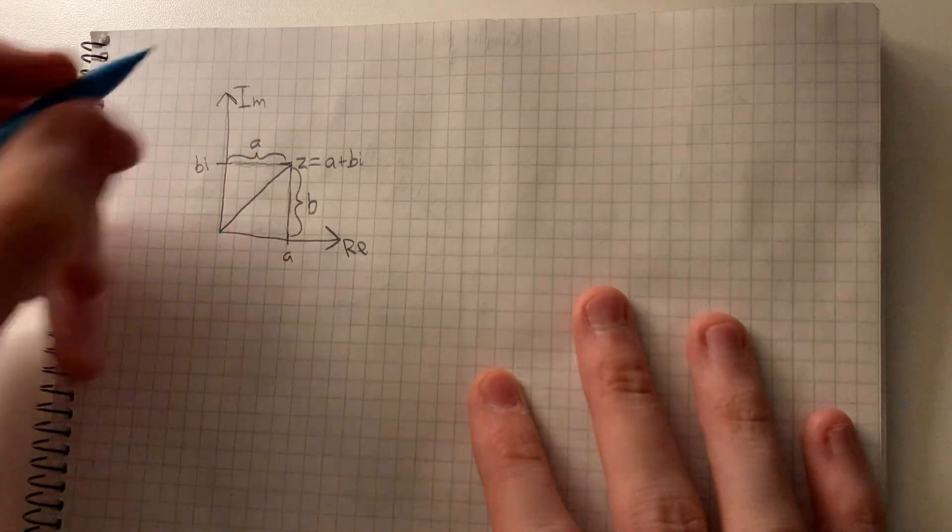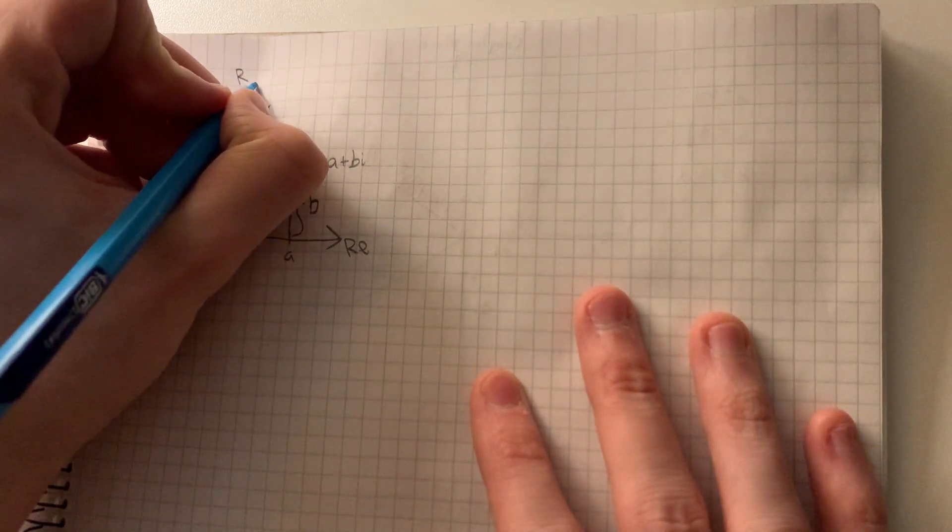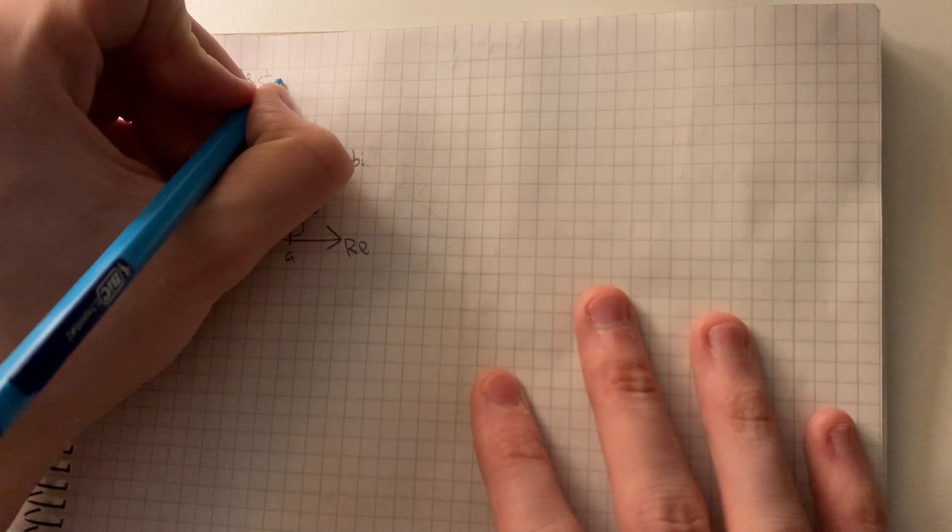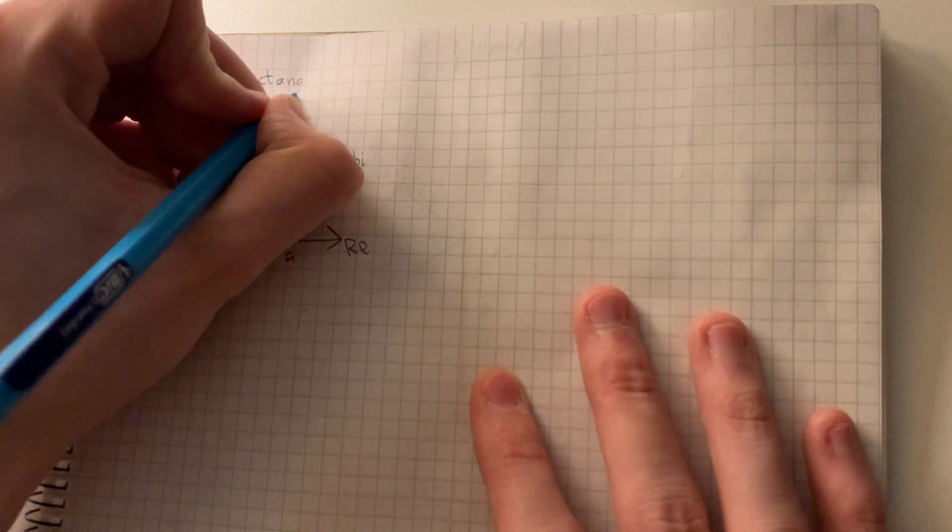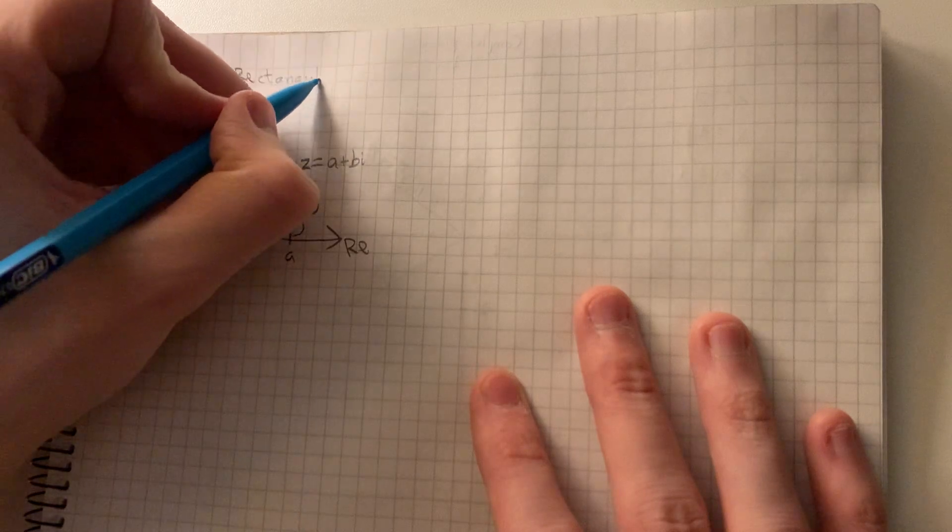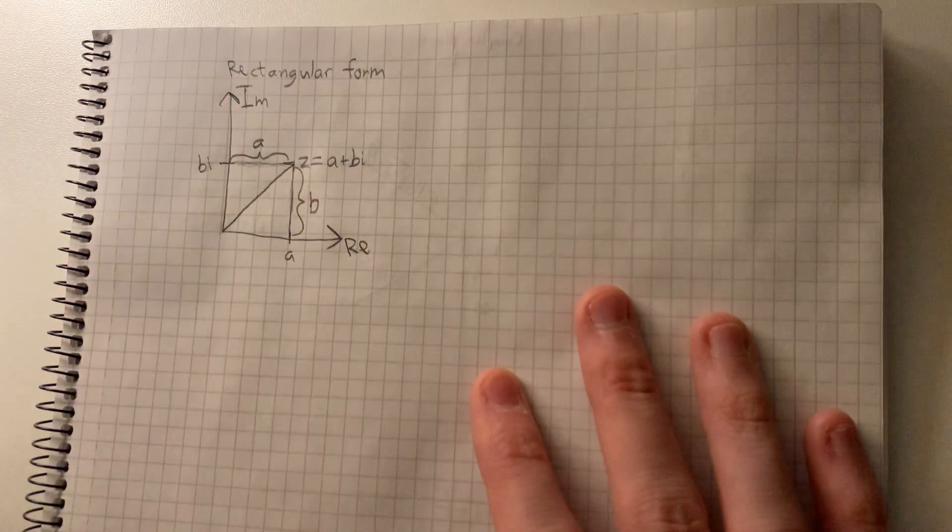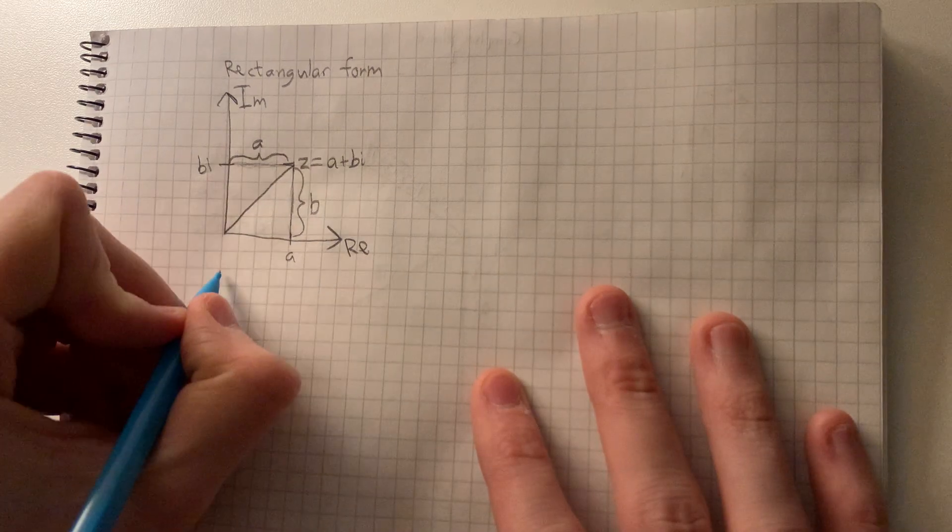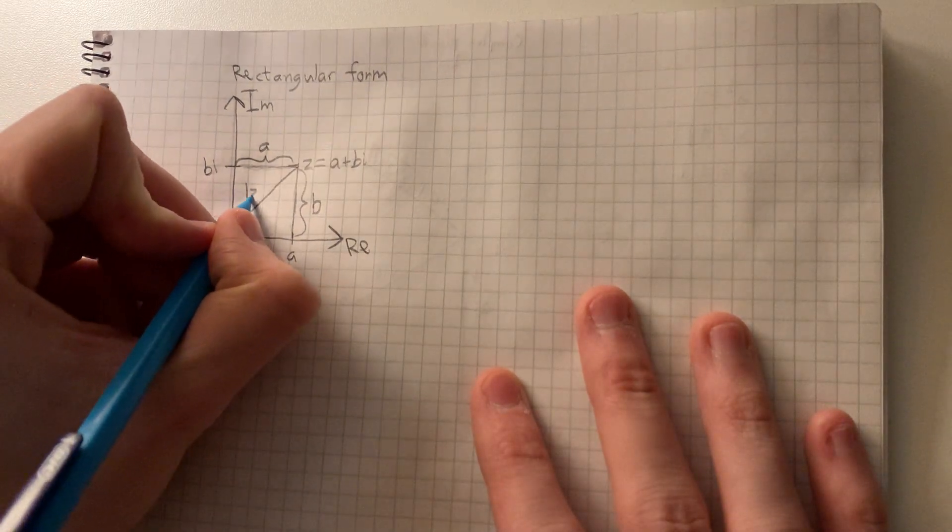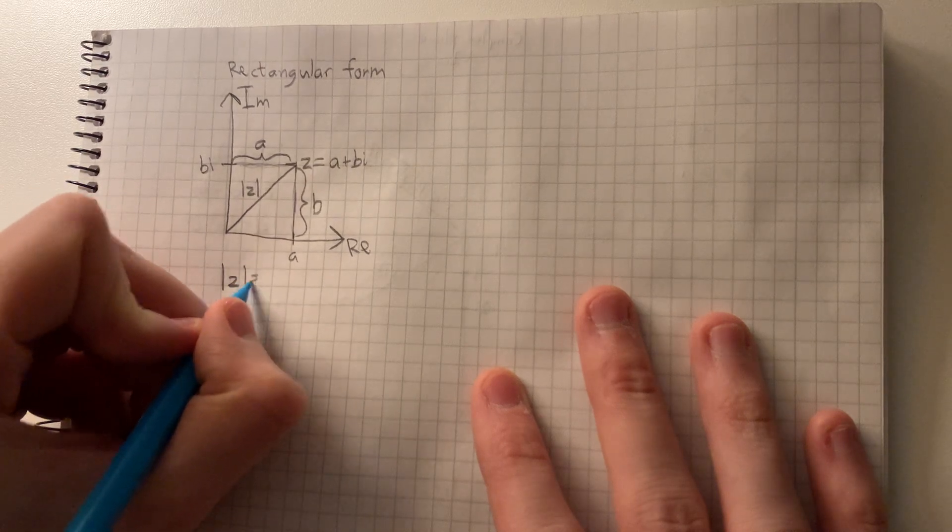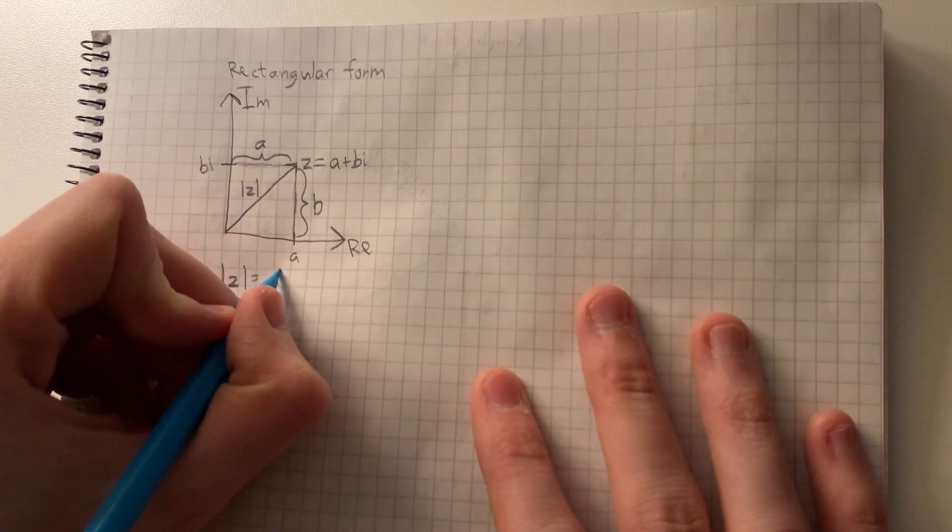We call this rectangular form, where the absolute value or the length of z is found with Pythagorean theorem.